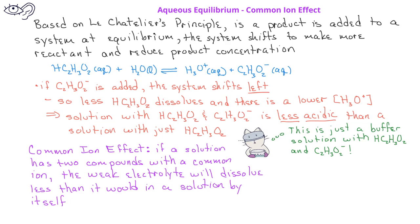In this case, the acetate ion, which is present in both sodium acetate and acetic acid. While a 0.100 molar acetic acid solution has a pH of 2.90, a solution with both 0.1 molar acetic acid and 0.1 molar sodium acetate, in other words, a buffer solution, would have a pH of 4.7. It would be less acidic due to the common ion effect.